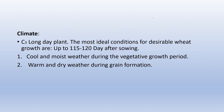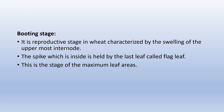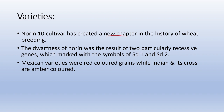Wheat is a C3 plant and a long-day plant, unlike rice which was a short-day plant. The most ideal condition for wheat growth is up to 115–120 days after sowing. Cool and moist weather is required during vegetative growth, while warm and dry weather is required during grain formation. At booting stage, the flag leaf starts to swell — this is the stage of maximum leaf area. Regarding varieties: Norin 10 cultivar created a new chapter in wheat breeding. The dwarfness of Norin 10 results from two recessive genes symbolized as Rht1 and Rht2 (SD1 and SD2). Mexican varieties have red-colored grains while Indian and their crosses have amber-colored grains.